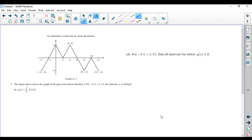And part D. This question asks for the entire interval from negative 4 to 12, find all intervals for which G is less than 0.